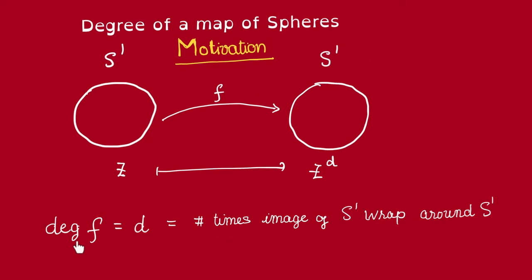One way to think about the degree of f is that it captures the number of times the image of this S¹ wrapped around this S¹. For example, let's look at the case when degree of f is 2, so that f is a square map.